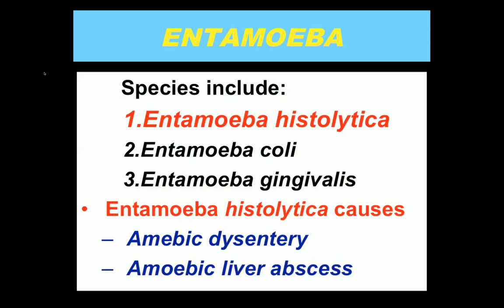Today we are going to discuss Entamoeba. Six species have been identified; the three important ones are: number one, Entamoeba histolytica, which is of medical importance because it causes amoebic dysentery and amoebic liver abscess in human beings. Entamoeba coli, present in the intestine, and Entamoeba gingivalis, present in the mouth, are of interest as their trophozoites are difficult to distinguish from those of Entamoeba histolytica by light microscopy.